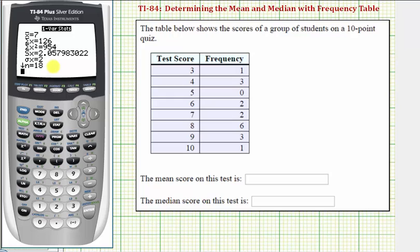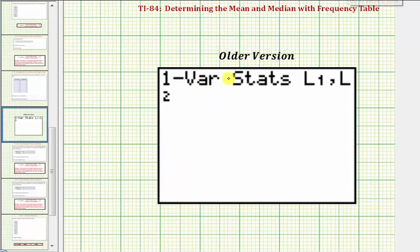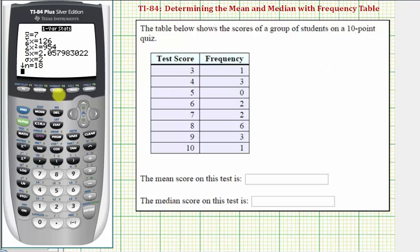Before we find the mean and median though, I do want to show a screenshot of the older 84 or the 83. On the older version, once you select the one-var stats that shows on the home screen, and then we'd have to enter the location of the data, comma, the location of the frequency. So we'd have to enter L1 by pressing second one, comma, which is above the seven, and then second L for list two. And then once you press enter, we get this same screen.